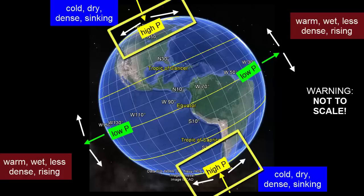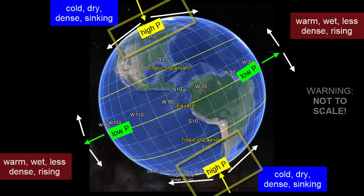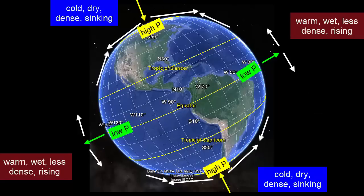What happens to the air that sinks at the poles? It is warmed up with the compression as it sinks, and then it spreads outward from the poles, evaporating water all along its path and being deflected by the Coriolis effect. By the time it reaches 60 degrees north and south, it collides with air masses coming from the other direction.